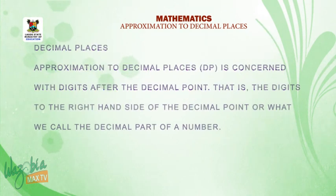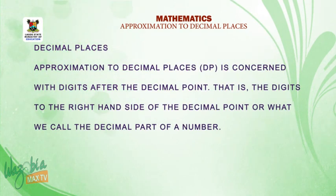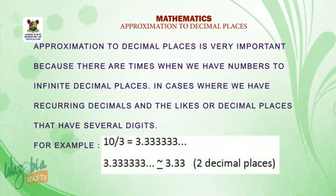Next, we shall be looking at decimal places. Approximation to decimal places is concerned with digits after the decimal point, that is, the digits to the right-hand side of the decimal point or what we call the decimal part of the number. Approximation to decimal places is very important because there are times when we have numbers to infinite decimal places, in cases where we have recurring decimals and the likes.